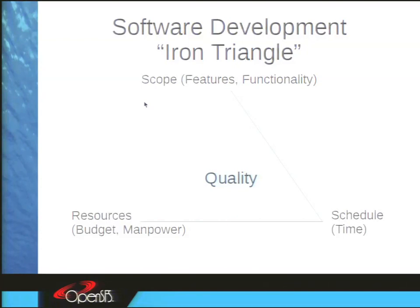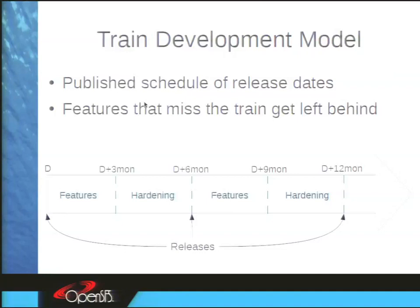We've decided with Intel and the community to follow a train model: a major release of Lustre every six months. Every release is followed by about three months when you can land major new features, then another three months where the feature window is closed for hardening and testing. If we allow that window to slip, we have less time to test and are more likely to slip the release date.